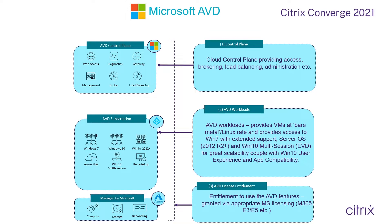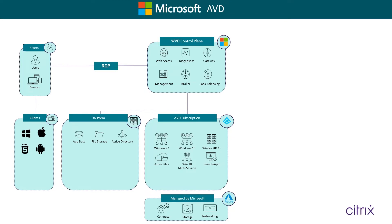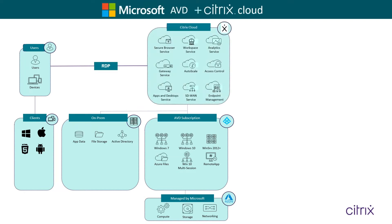However, when you include Citrix in the equation, you will begin to see the added advantages. The first thing we're going to do is actually replace the AVD control plane with one of our own. This is where our Citrix Cloud services will come into play — access to our SD-WAN service, Gateway service, Autoscale service, Analytics service, and others will be available to Citrix Cloud customers with an AVD subscription.